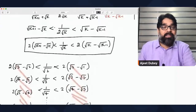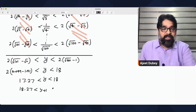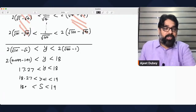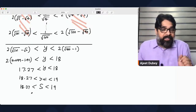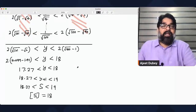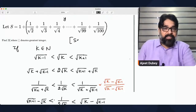Since s = 1 + y, adding 1 to both sides: approximately 18.27 < s < 19. So s lies between 18.27 and 19. Since we know s is between 18 and 19, the greatest integer of s — that is, floor(s) — equals 18. So the final answer is 18.